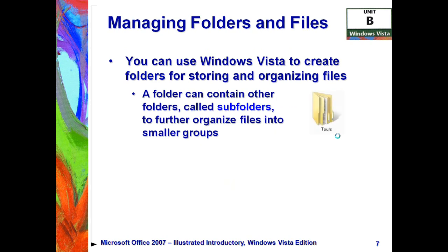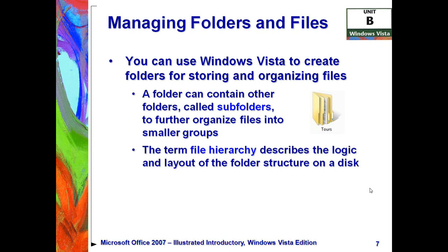Sometimes one folder may not be enough. You may actually need to have folders within folders — what we call subfolders. This icon has a folder on the outside and a folder on the inside, and it's named 'Tours,' showing that there are multiple folders inside if you double-click on it. Ultimately, this all leads to the term 'file hierarchy,' which describes the logic and layout of the folder structure. We're going to be seeing an image in a few moments that shows us a hierarchy and where things are saved in relation to other things.